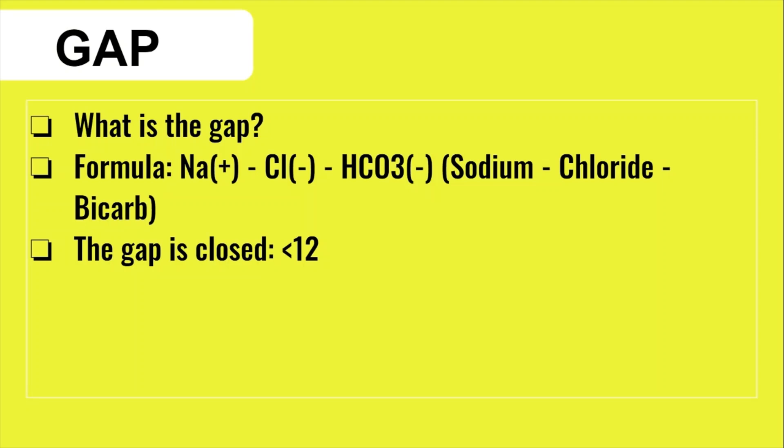In homeostasis or when there is an acid-base balance, this formula is going to give you a number that is less than 12. However, in DKA, since ketones are an anion, the formula will yield a number higher than 12, which is when people will say there is a high anion gap. We check the gap every 4 hours while a patient is on an insulin drip to assess if the gap is closing — meaning decreasing — which tells us that the ketone issue is beginning to resolve.